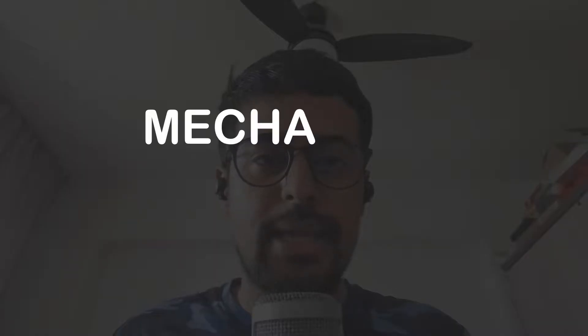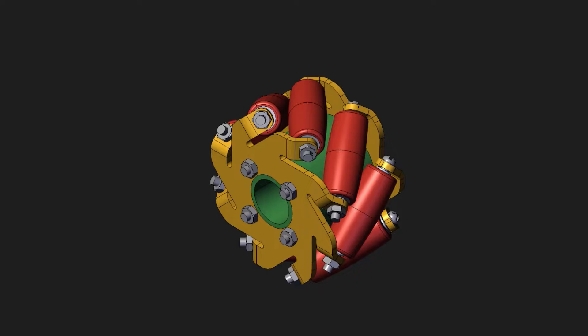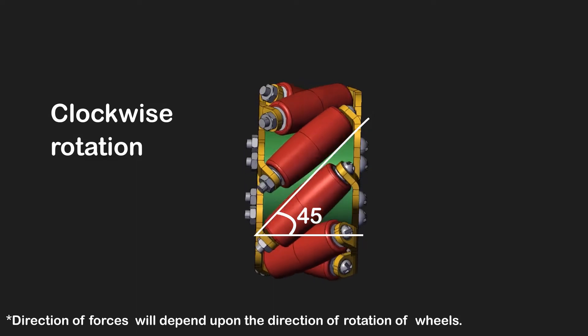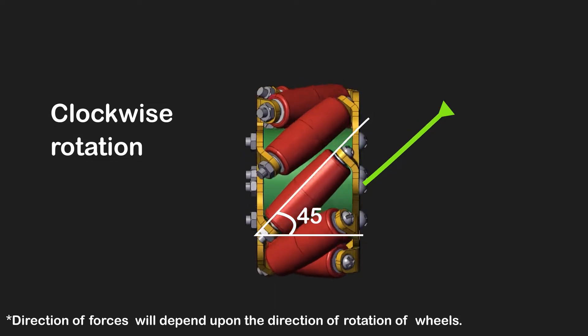First, we'll understand the mechanics of mecanum wheels. The rollers are at an angle of 45 degrees. When the wheels rotate, a friction force is generated at this angle, and our wheels will move in that direction.